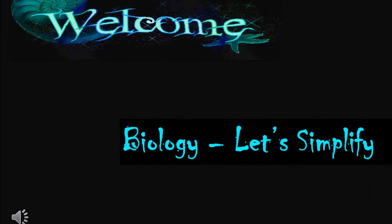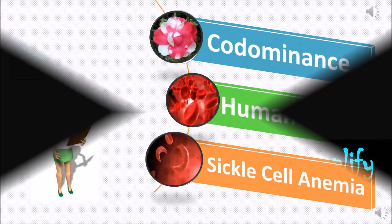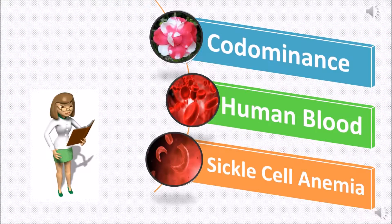Hi everyone, welcome to Biology Let's Simplify. Today I will discuss co-dominance in humans, plants and animals, human blood, and sickle cell anemia.